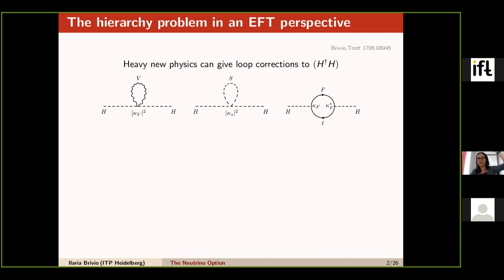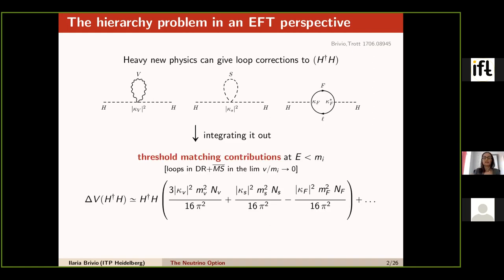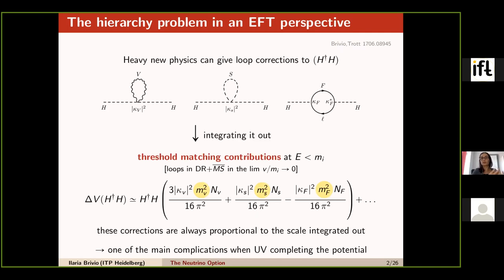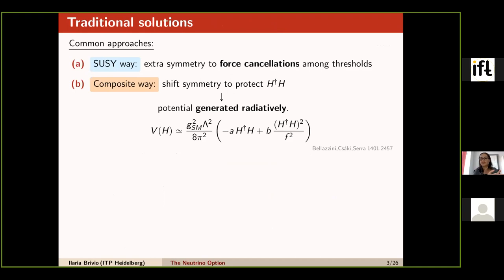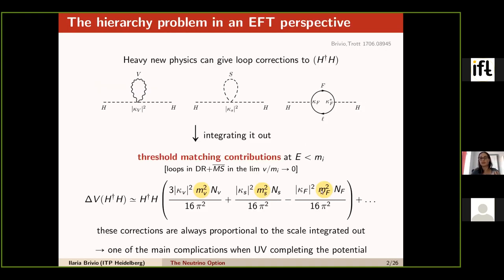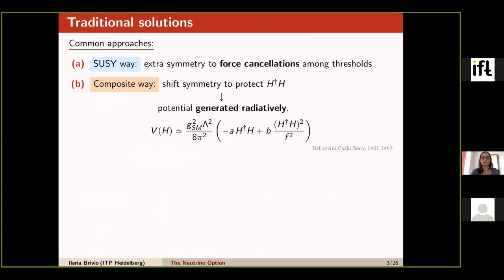When you integrate out heavy new particles from the spectrum, you generate contributions that do not vanish as the mass of the new state goes to infinity — they remain finite and are proportional to the squared mass itself, since they contribute to a two-point function with mass dimension two. The hierarchy problem emerges as a question of threshold matching contributions. Two usual approaches are: forcing cancellations between different thresholds (the SUSY idea, using scalar/fermion cancellation via symmetry), or suppressing them.